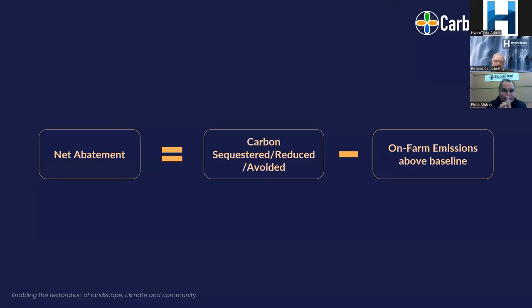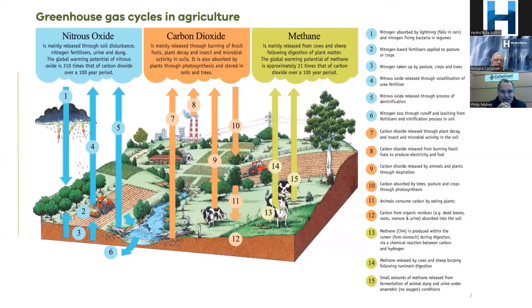On leakage: you've got to look very carefully not only at your sequestration but at what your on-farm emissions are, and ensure that you don't go above the baseline. That means accounting for nitrous oxide, methane, carbon dioxide, fuel, and electricity — all your potential emissions on farm need to be accounted for at the baseline and at each subsequent measurement or trade of carbon.